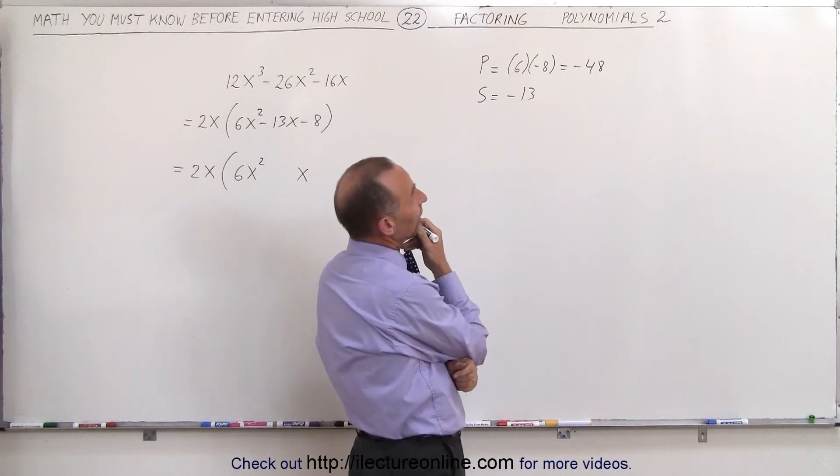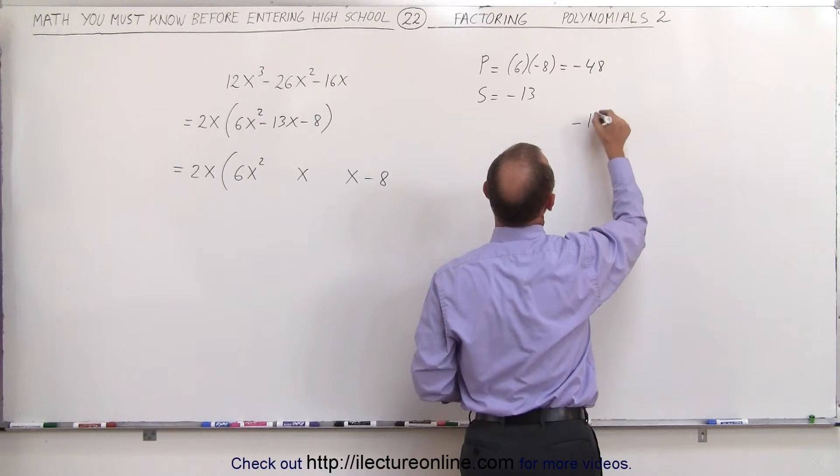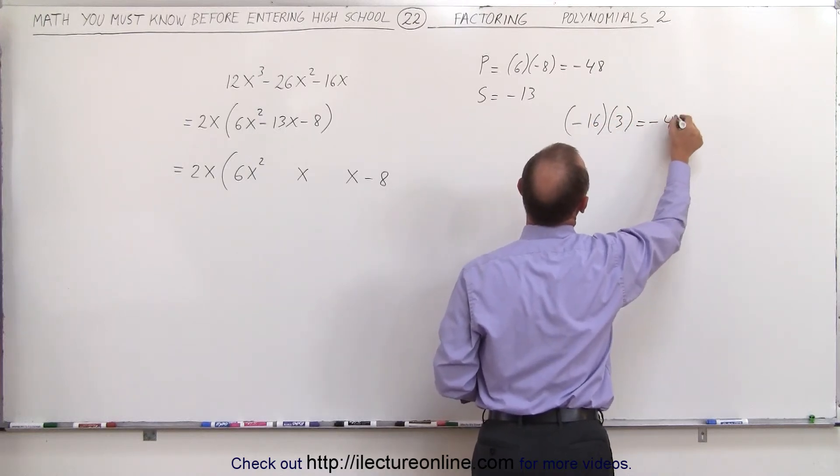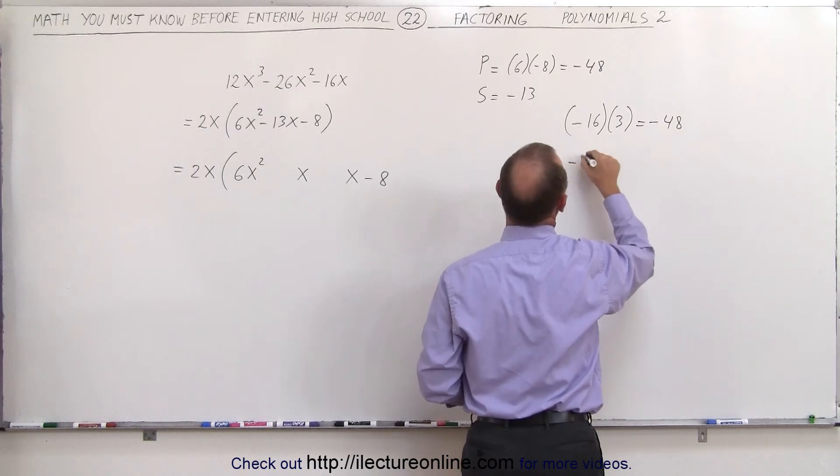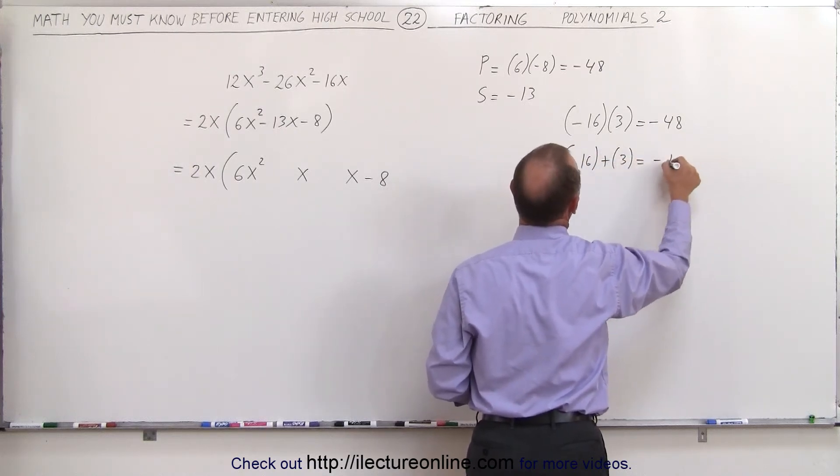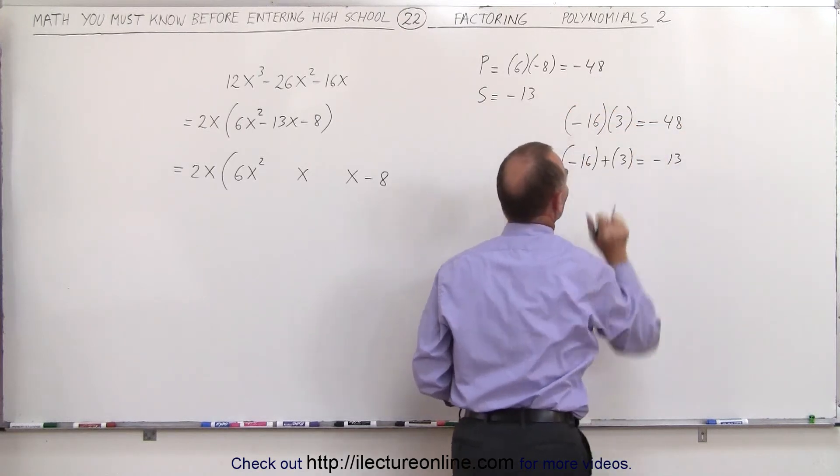So let's see here. How about 16 times 3? Yes, I think that will work. A minus 16 times a plus 3 will give us a minus 48. And when I add them together, minus 16 plus a positive 3 gives us a minus 13. So minus 16, minus 13. These are the two numbers.